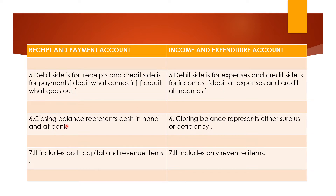The sixth point states that the closing balance in the receipt and payment account represents cash in hand and at the bank — the closing balance shows you the cash in hand and cash at bank. Whereas in income and expenditure account, the closing balance represents either surplus or deficiency; it will not show you your cash balance. That is why the closing balance is merged into the capital fund, be it surplus or deficiency.